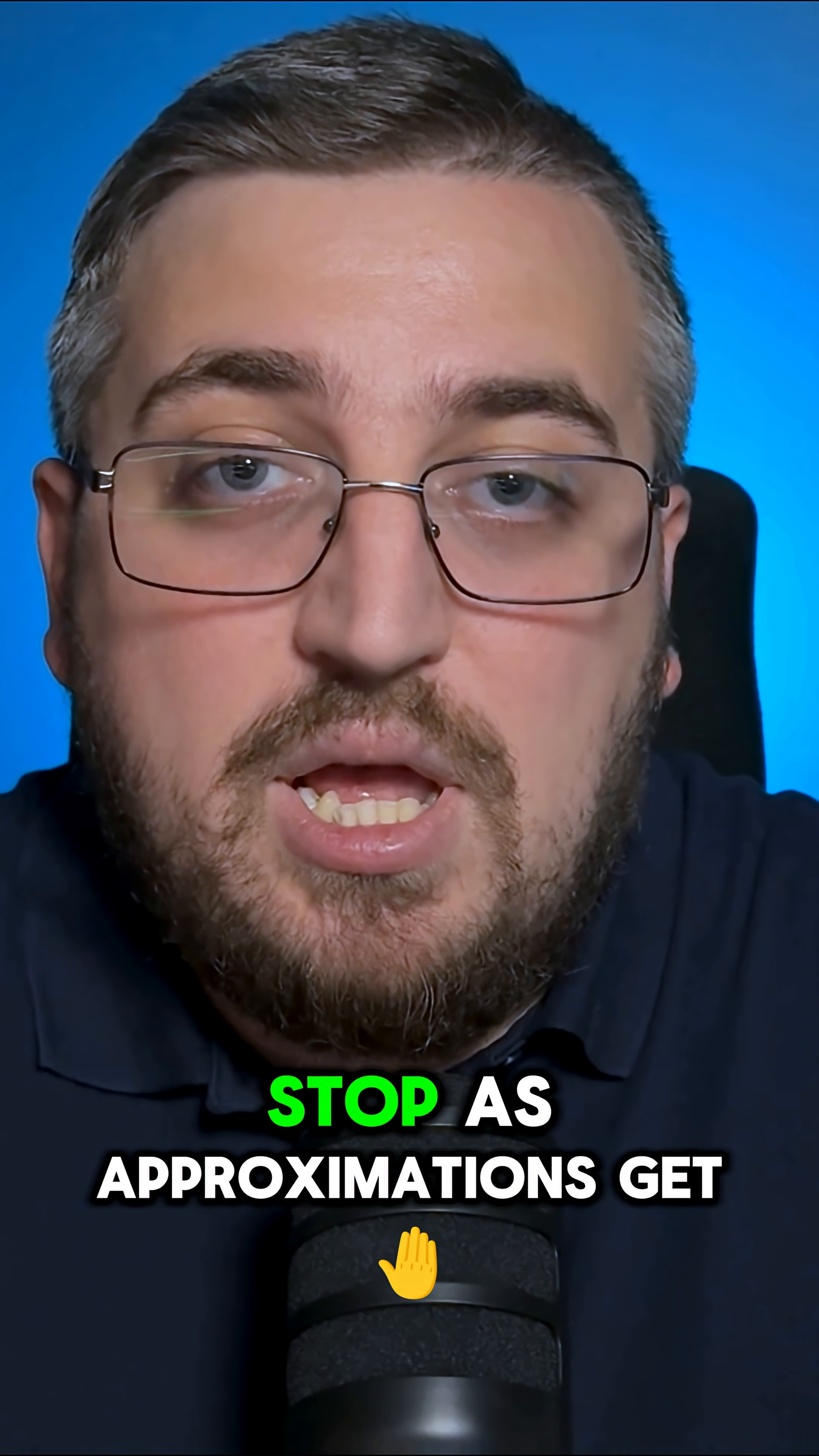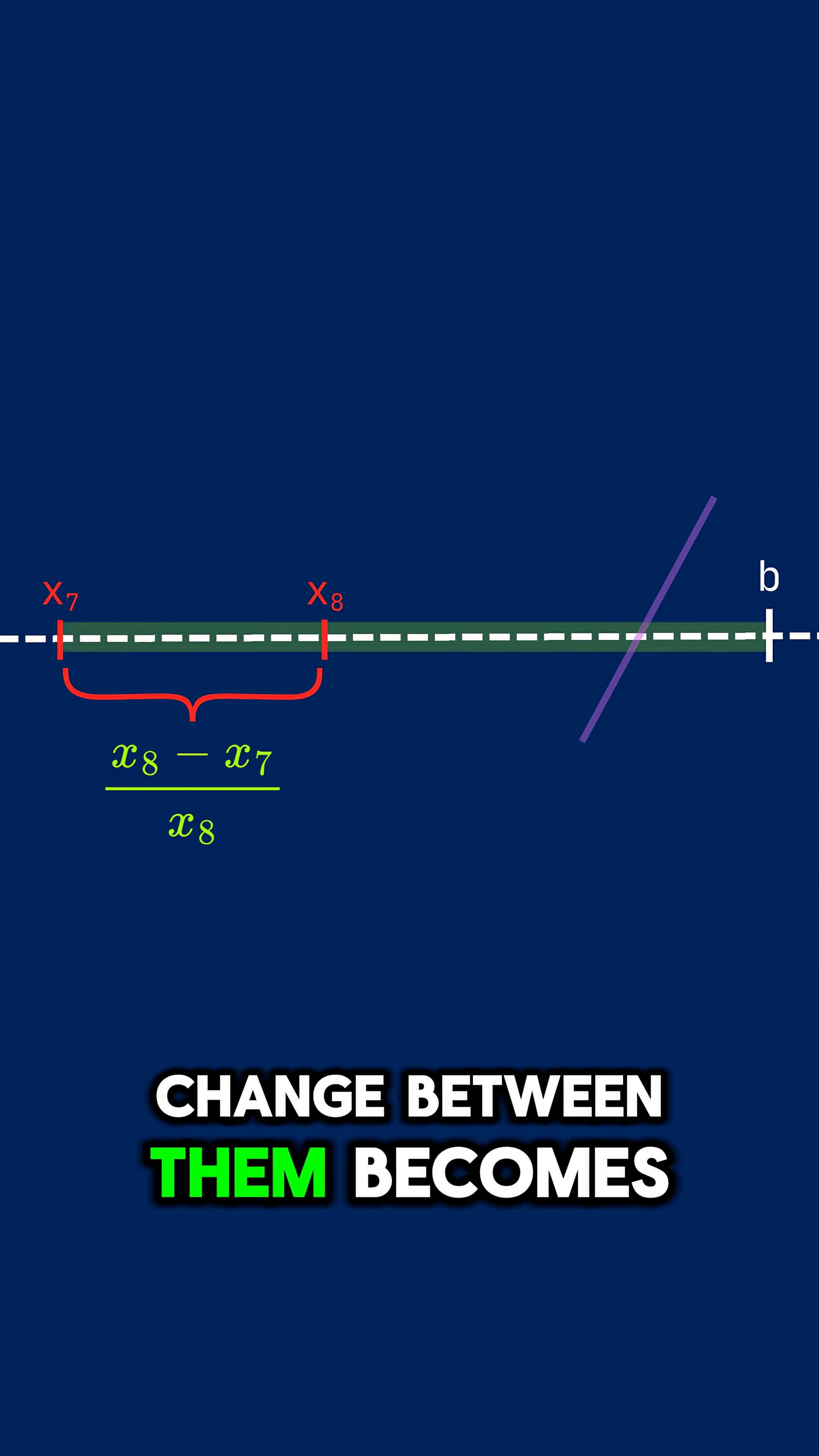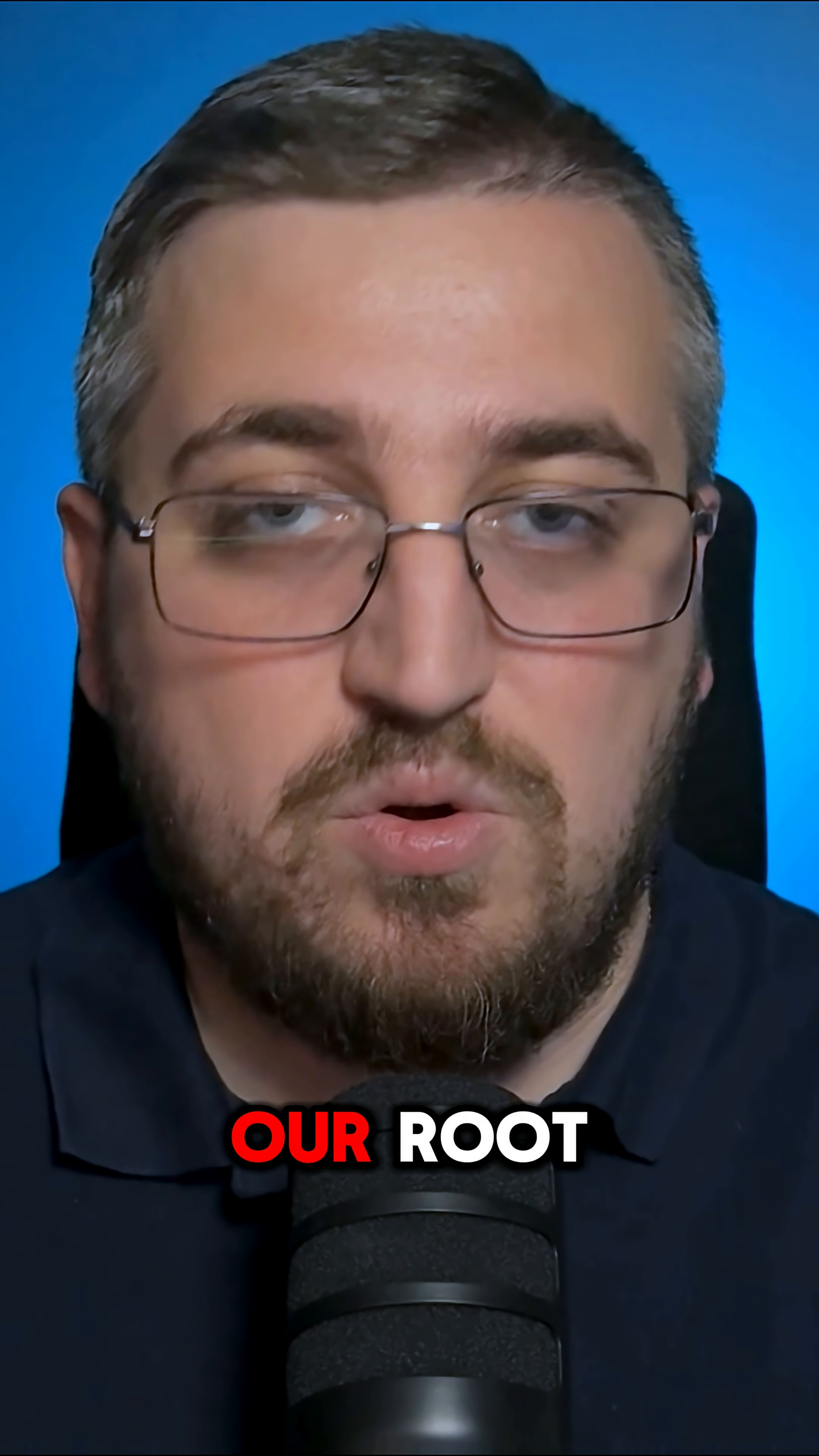But when do we stop? As approximations get closer to the true root, the change between them becomes so tiny that once the difference is smaller than a set tolerance we can stop and accept the result as our root.